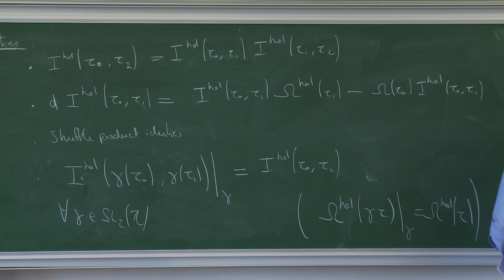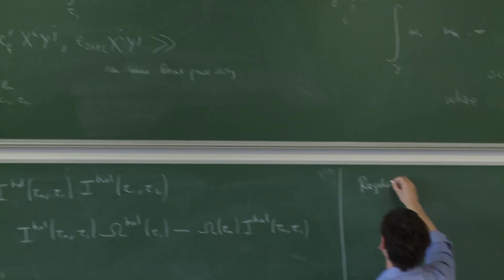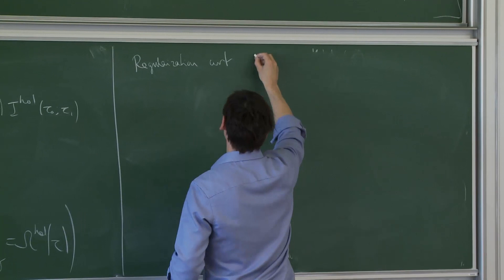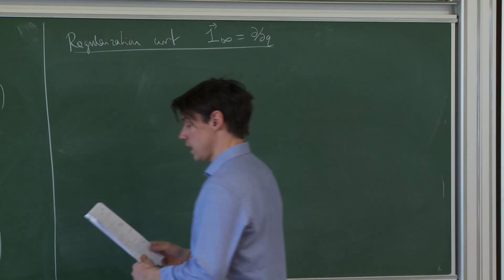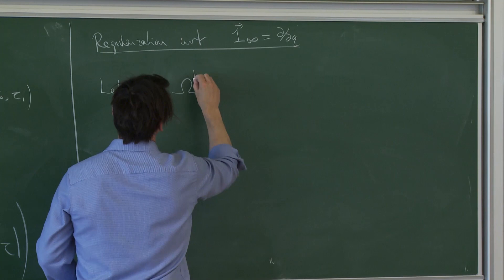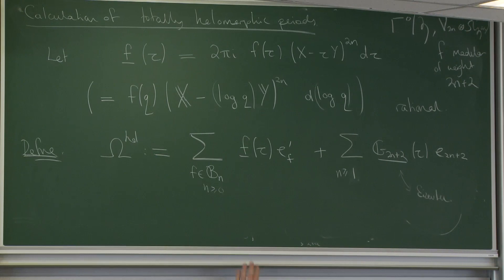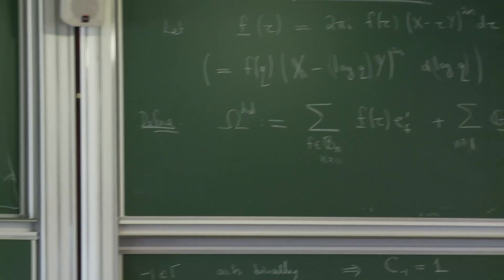These are integrals between two points on the upper half plane; now I want to take one of these points to be the cusp. Things are going to diverge, so we need to do a regularization with respect to the tangent vector at the cusp, which is playing the role of our base point. The cusp forms pose no problem at all because they go to zero very fast near the cusp; the problem is the Eisenstein series, which have a zeroth Fourier coefficient giving divergence as you go to infinity. So the thing to do is to isolate out this divergence and take what's essentially the residue in the q-disk — all we get is the zeroth Fourier coefficients of the Eisenstein series.